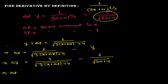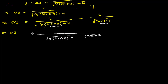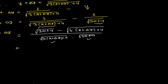In the next step I take the LCM of these two fractions. The LCM will be √(3(x + δx) + 4) times √(3x + 4). After dividing, I am left with √(3x + 4) in the numerator minus √(3(x + δx) + 4).